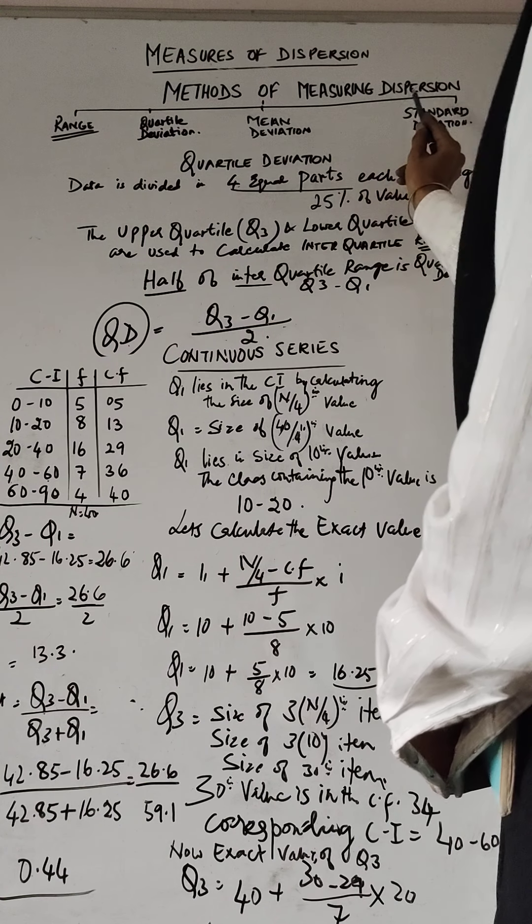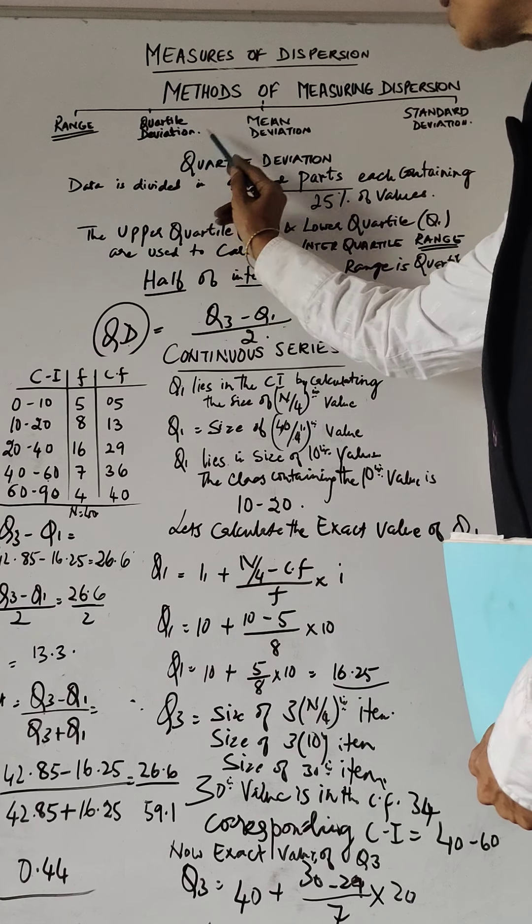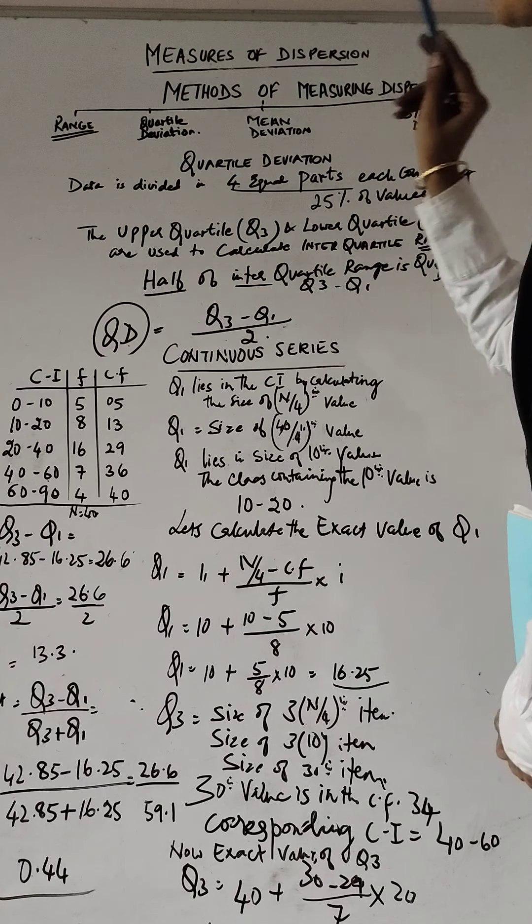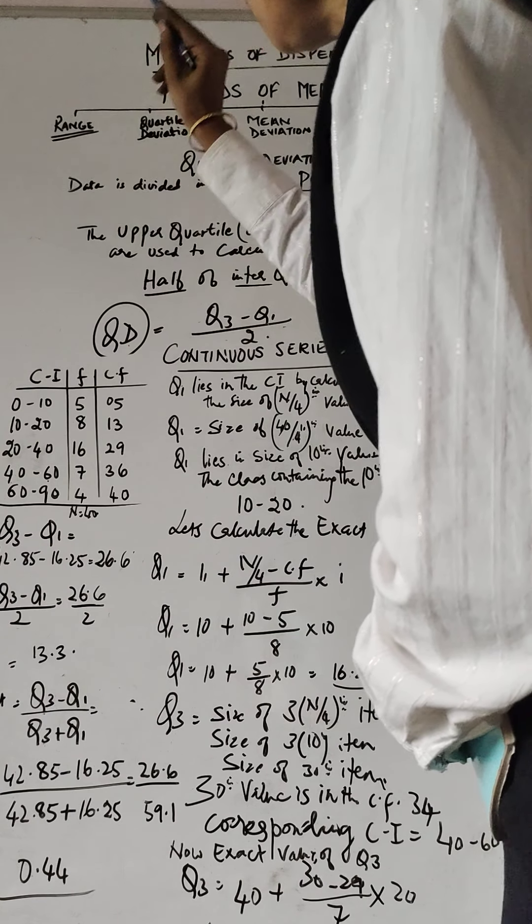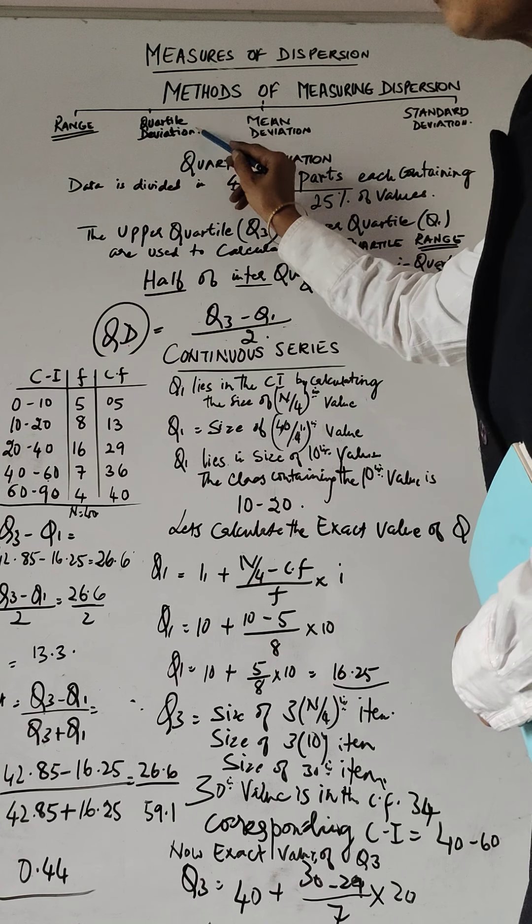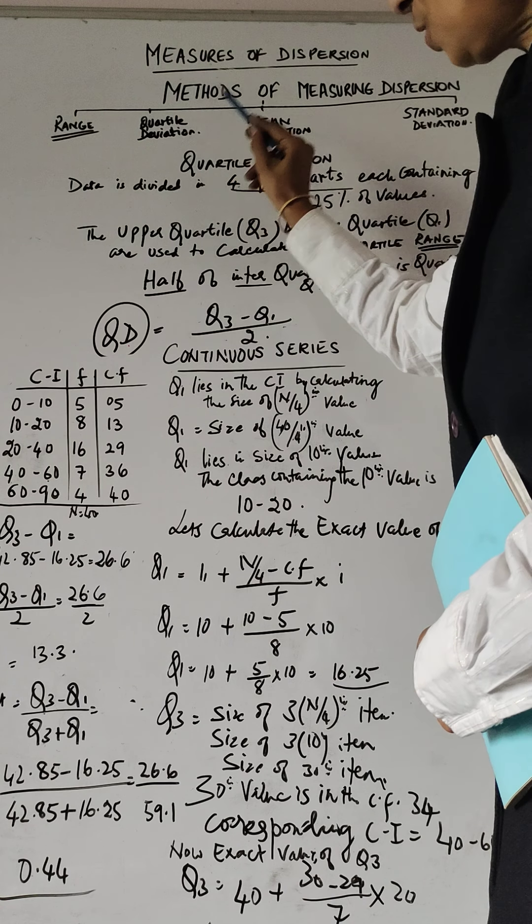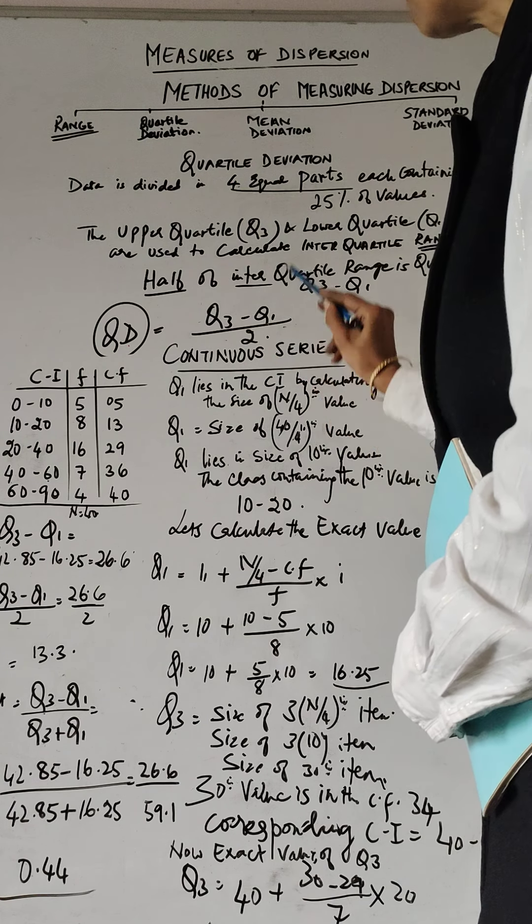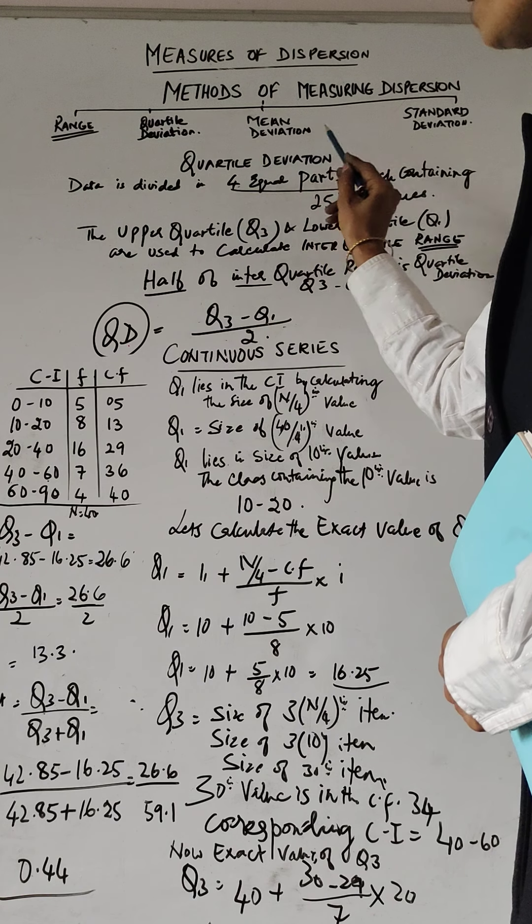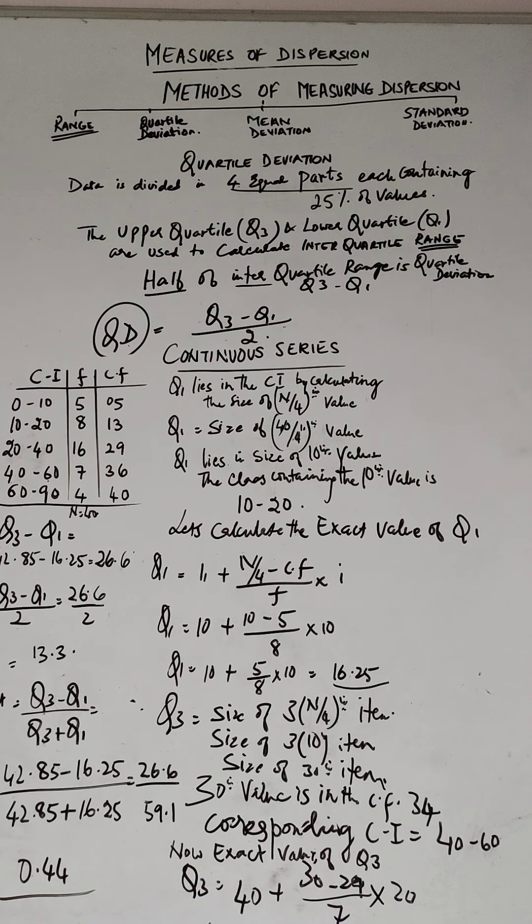Measures of dispersion, methods of measuring dispersion again: range, quartile deviation, mean deviation, and standard deviation. We finished with range and quartile. Right now we are going to finish quartile deviation because we are doing continuous series. Quartile deviation means dividing into 4 parts, right? That is all about it.